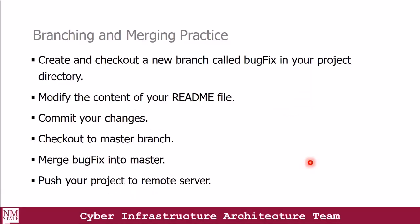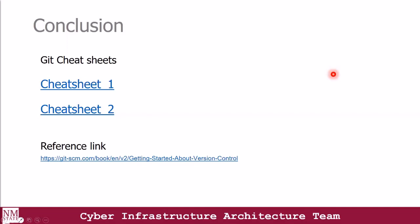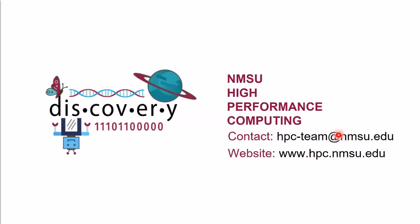Next, I'm going to encourage you to practice branching and merging on your own. You're going to create and check out a new branch called bugfix in your project directory, modify the contents of your readme file, commit your changes, check out to master branch, merge bugfix into master, and then push your project to the remote server. In order to learn more about Git, you could always use the reference link here, and you could also download the cheat sheets we have. So that brings us to the end of this tutorial, and I hope you enjoyed it. If you have any questions or concerns, you could always reach out to us at hpc-team@nmsu.edu. Thank you.